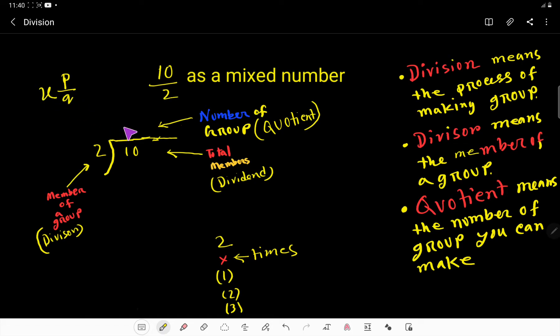The value of x, that is the whole number, will come from the quotient of this division. If I divide 10 by 2, then I will get a quotient, and the value of that quotient is the whole number. Then we have p - if we get any remainder, that remainder will be the numerator p, and q is the divisor, here 2.